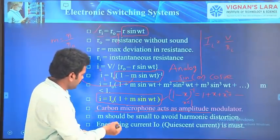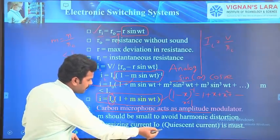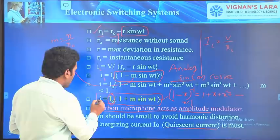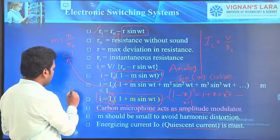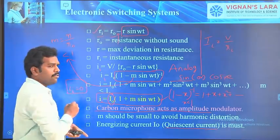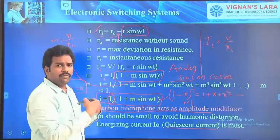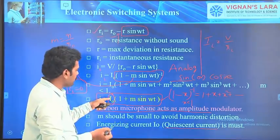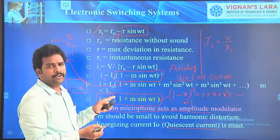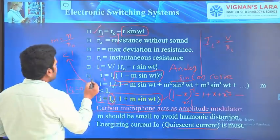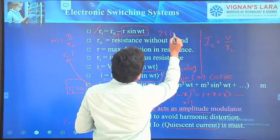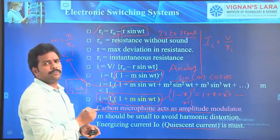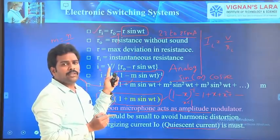One more point: I0 is called the quiescent current or bias current. For example, if I0 equals 0, then Ii becomes 0, meaning the microphone will not do any modulation — it will not convert the voice to a current pulse. Therefore, this bias current is very much required for the operation of a microphone. Generally, a microphone requires 23 to 25 mA of current for proper operation, and this current is provided from the voltage source battery.